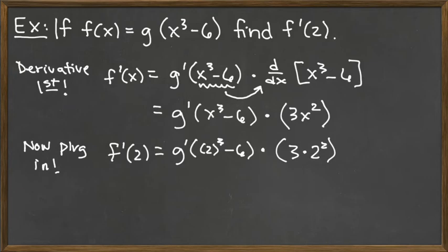So we can do a bit more work here. We've got g prime of – 2 cubed is 8, so we're looking at 8 minus 6. So 8 minus 6 is 2. So we have g prime of 2 times – we have 3 times 2 squared, so that's 3 times 4 is 12. So we're really looking at 12 times g prime of 2.